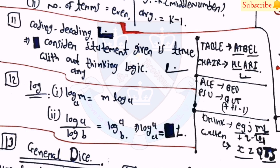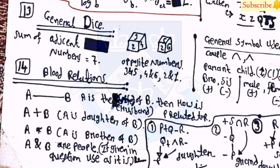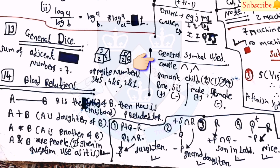The twelfth concept covers logarithms. The two key formulas are: log(mᵃ) = m·log(a), and log(a)/log(b) = log_b(a). Note that log_a(a) = 1. For a general dice, if the sum of opposite face numbers equals 7, those values are opposite to each other — so 3 and 4 are opposite, 2 and 5 are opposite, and 1 and 6 are opposite.